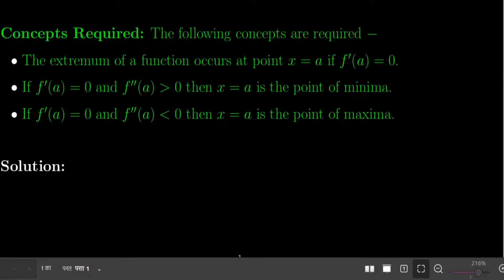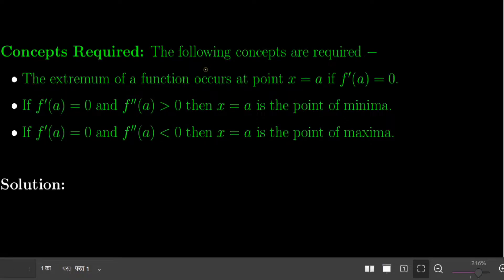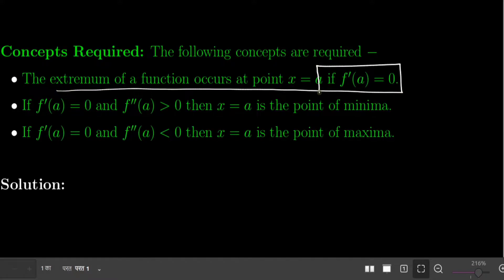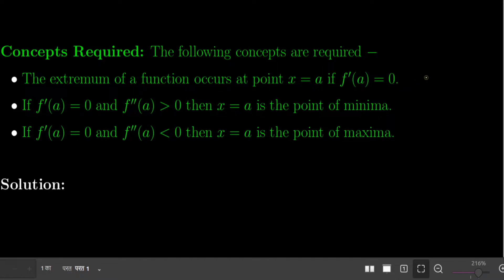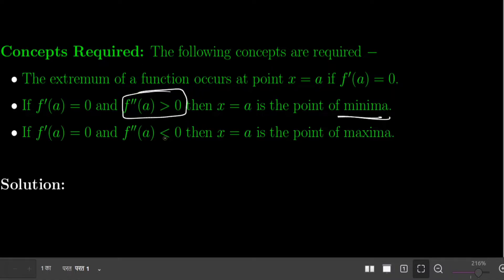The concepts required for solving this question: the extremum of a function occurs at a point A if the derivative of the function at A is zero. Additionally, the extremum is a point of minima if the double derivative is positive, and a point of maxima if the double derivative is negative.